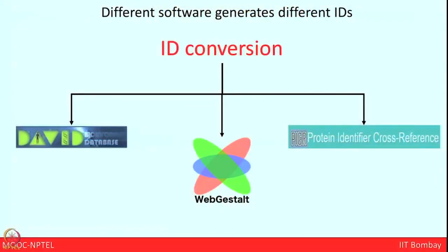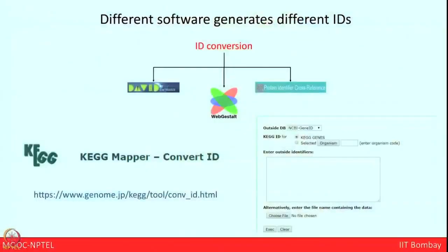There are mainly three important platforms to consider for ID conversion. The first is DAVID — a multiple ID conversion tool that can also help with different types of annotation and enrichment studies. Next is WebGESOLT, which can also be used for different kinds of ID generation. The next is Protein Identifier Cross-Reference — another platform where we can upload our IDs and get multiple ID conversions. DAVID, WebGESOLT, and Protein Identifier Cross-Reference are simple tools where we just need to put in a list of IDs and select what list of IDs we want as a conversion.